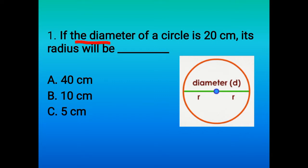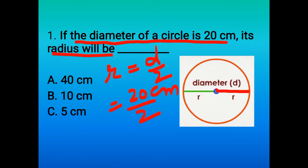If the diameter of a circle is 20 centimeters, its radius will be... We know that this distance is known as radius, and radius is half of the diameter. Now here diameter is 20 centimeters, so we are going to divide it by 2. After division we get 10. So the correct answer is option B, that is 10 centimeters.